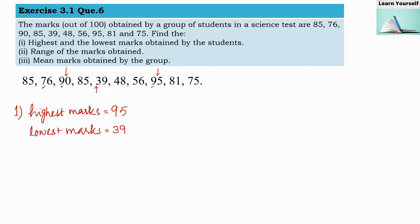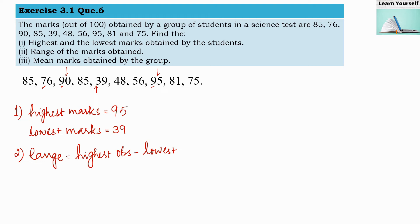Second, the range of the marks obtained. Range equals highest observation minus lowest observation, so our range is 95 minus 39, which equals 56.